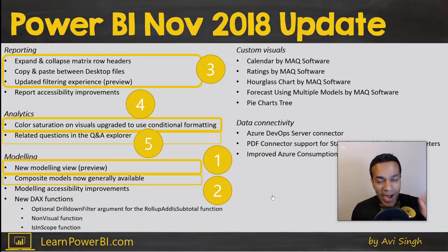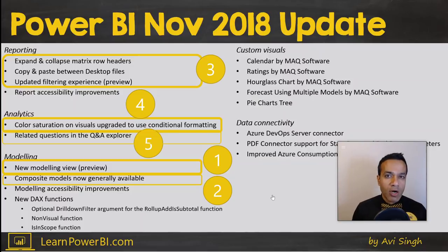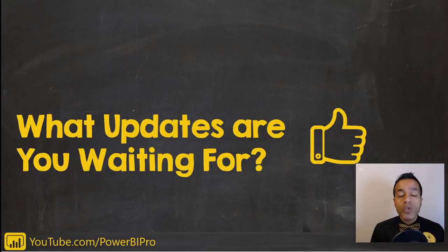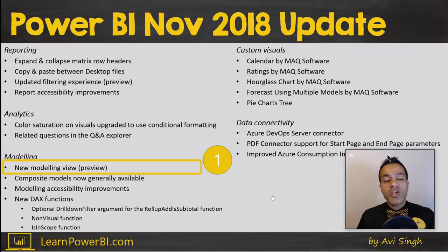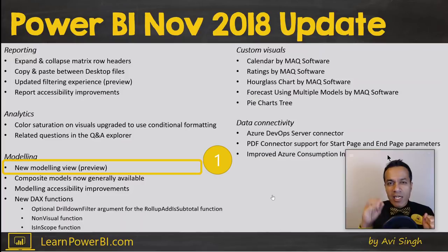We're going to cover the five key features in the Power BI November update. Number five around Q&A holds a lot of promise, but let's start with number one. If there are any updates that you would like to see in Power BI, make sure to leave them in the comments so we can all vote for them. The number one feature is the new modeling view — the biggest change we've seen in the modeling environment in Power BI.